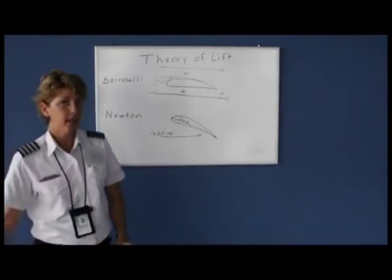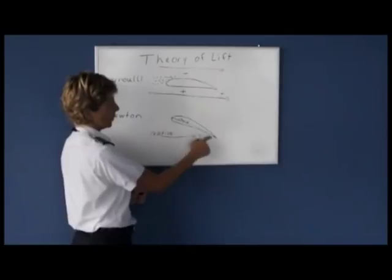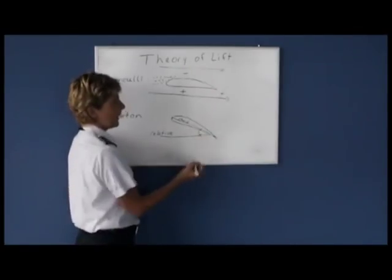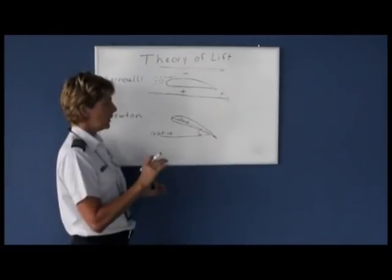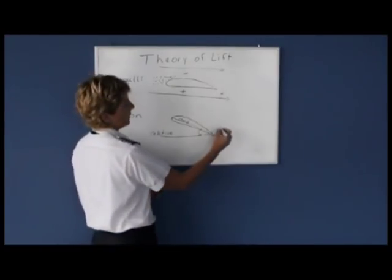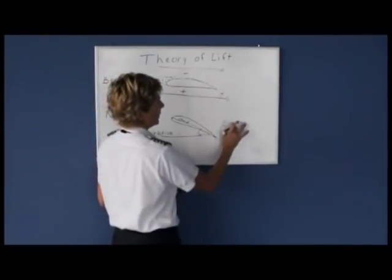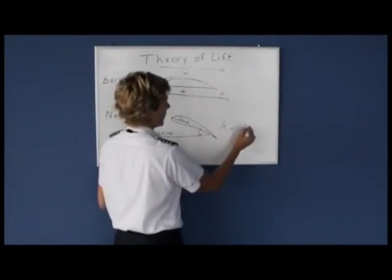When we look at the angle between the cord line and the relative wind, that angle we call angle of attack. It is the way the wing is attacking the wind. So angle of attack, often you'll see it abbreviated as AOA, angle of attack.